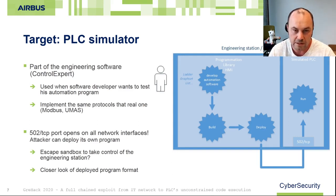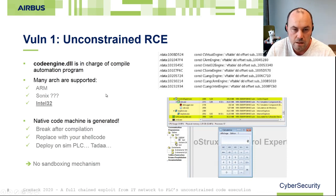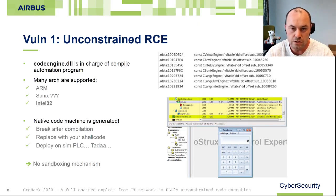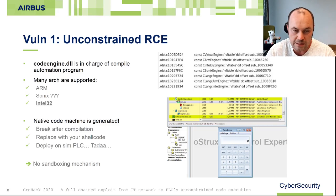If an attacker has network access to the simulated PLC, he can upload his own program and try to escape any sandbox mechanisms to take control of the engineering station. By doing reverse engineering on the Control Expert program we see that the library code_engine.dll is in charge of compiling the automation program. It's developed in C++, and by looking at vtable references we can see that Control Expert can compile programs for three architectures: ARM, Sonic, and Intel 32. In the simulated PLC case, the automation program is transformed to Intel 32 bytecode.